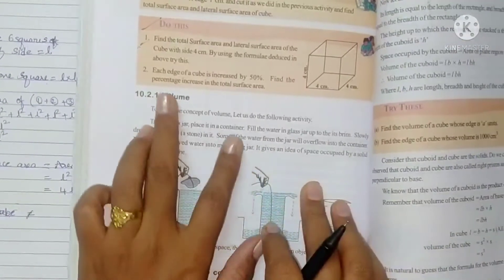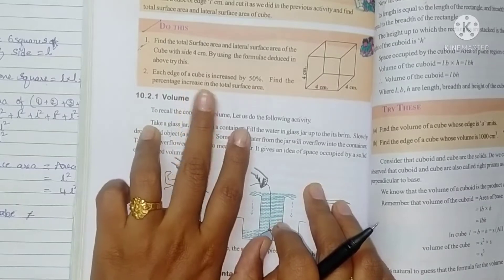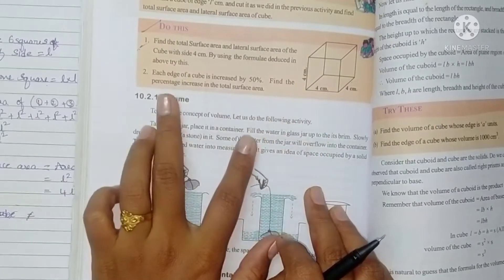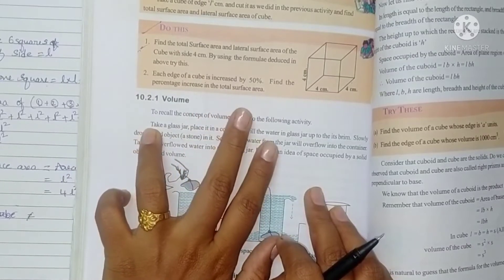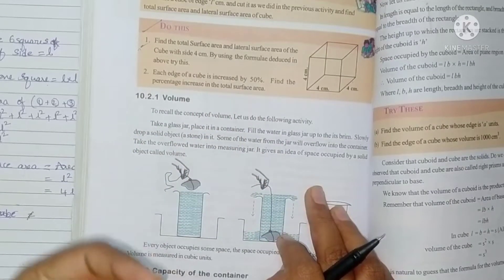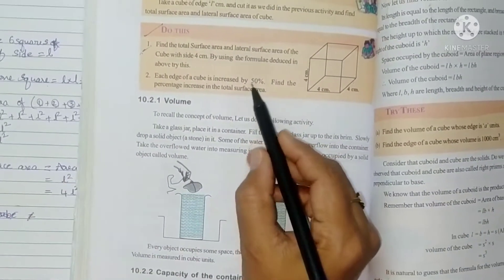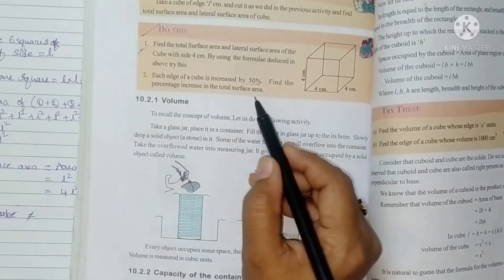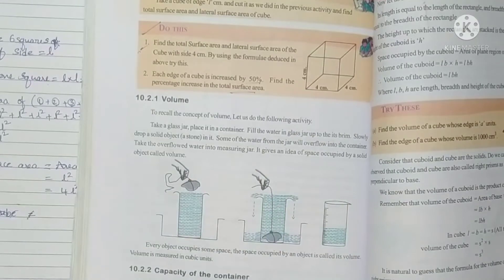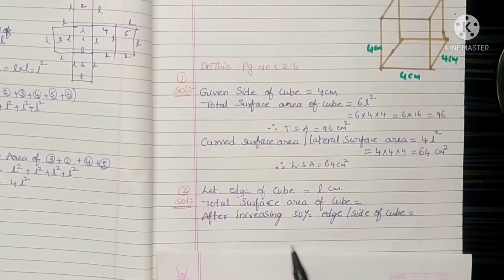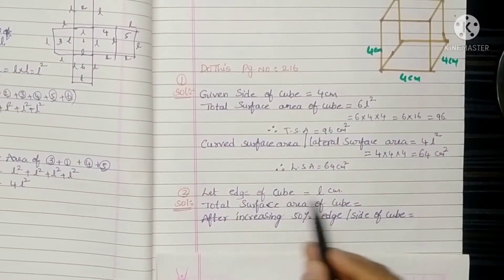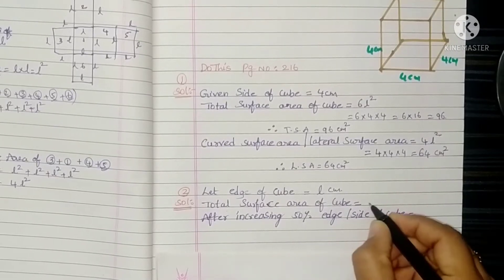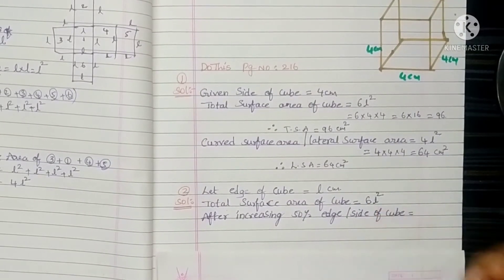Now the second problem: each edge of a cube is increased by 50%. Find the percentage increase in the total surface area. So let the edge of the cube be L cm. The total surface area of the cube is 6L².